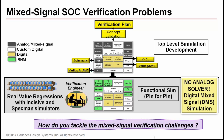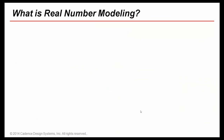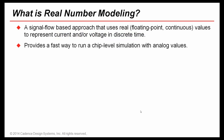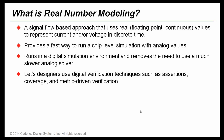It targets high-performance mixed-signal verification to enable full chip verification. Real number modeling is a signal flow-based approach that uses real values to represent current or voltage in discrete time. You model analog block operation as discrete real data, providing a fast way to run chip-level simulation with analog values. It allows you to run digital simulation in the DMS environment, removing the use of an analog solver while also allowing digital simulation speeds.